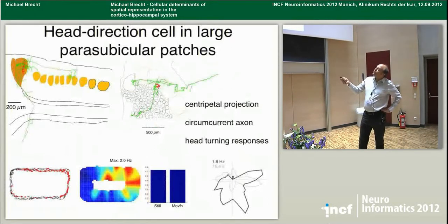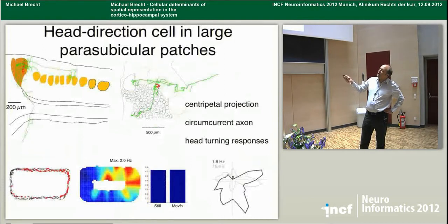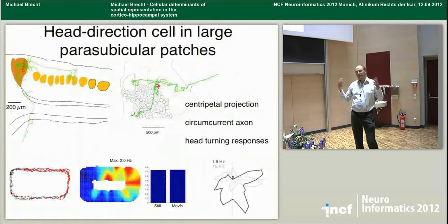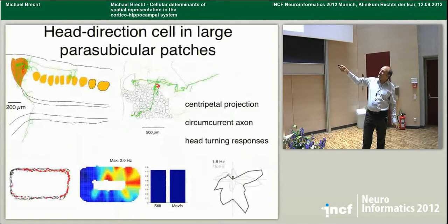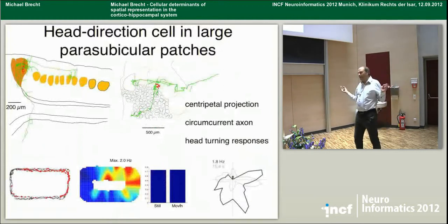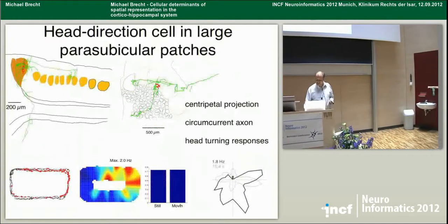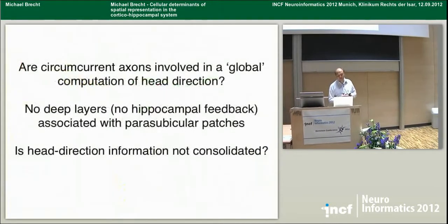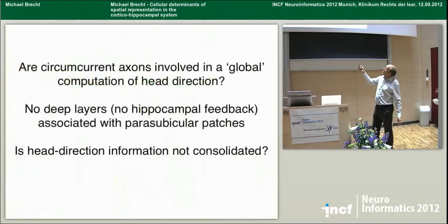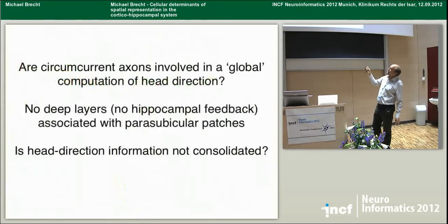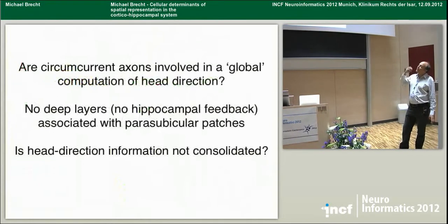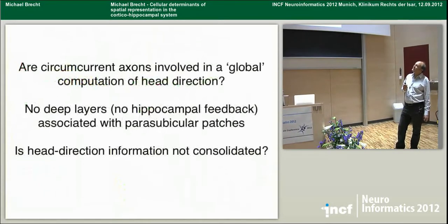In forced rotation experiments we see strong responses, very much suggesting these cells receive a lot of vestibular input. Regarding the microcircuits of these head direction cells — we wonder if these circumcurrent axons are involved in a global computation of head direction, aligning all the head direction vectors across the system. A key thing about a compass is that the needle shows in one direction, so this might enforce a common head direction vector. When you deposit dye in one of these bigger patches, the whole parasubiculum fills with axons — very strong global connectivity. By contrast, a similar injection into entorhinal cortex shows only local connectivity.